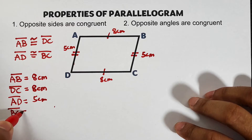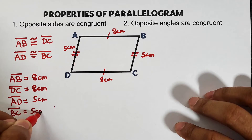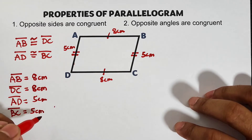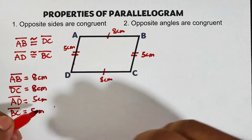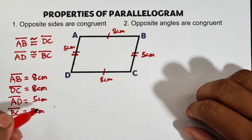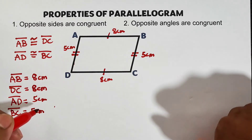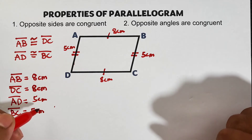BC is equal to 5 centimeters. That's all for the first property. Let's move on to the second property.